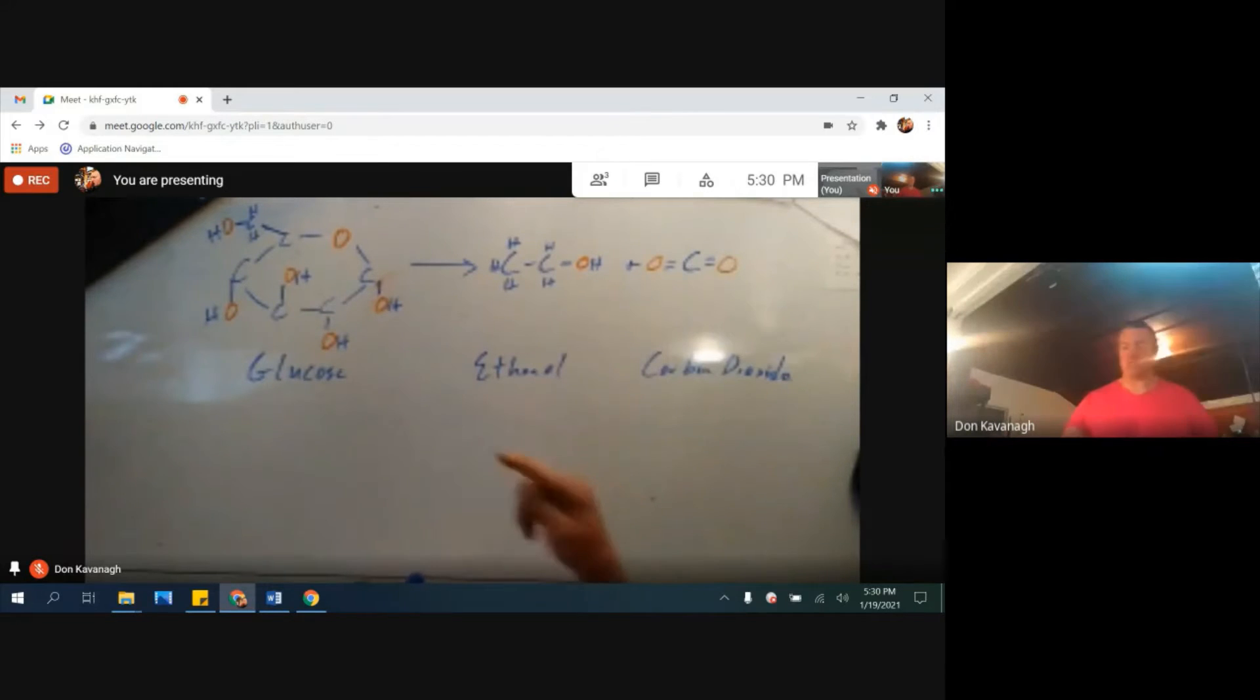Now, conservation of mass and energy, we start with six carbons. So if we start with six carbons here, we must have six carbons over here. We don't. Let's balance this up a little bit. So it'll actually be a pair. Two carbon dioxide molecules are going to be produced, and two ethanol molecules are going to be produced.